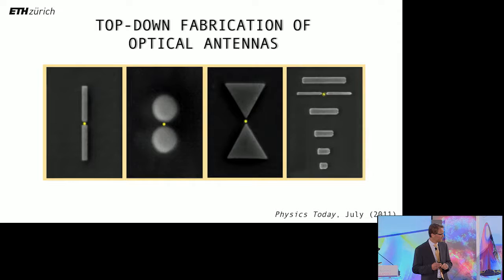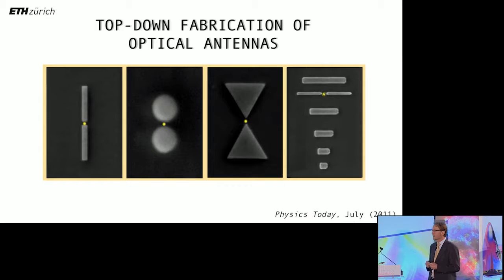In very recent years, we exploited nanofabrication techniques to synthesize or grow different antenna structures. Shown on the left is a dipole antenna, then we have a gap antenna, bow tie antenna, a Yagi-Uda antenna. The yellow point is the region where we want to localize the field. That's where our receiver or transmitter will be sitting. And I show you two examples from our research.